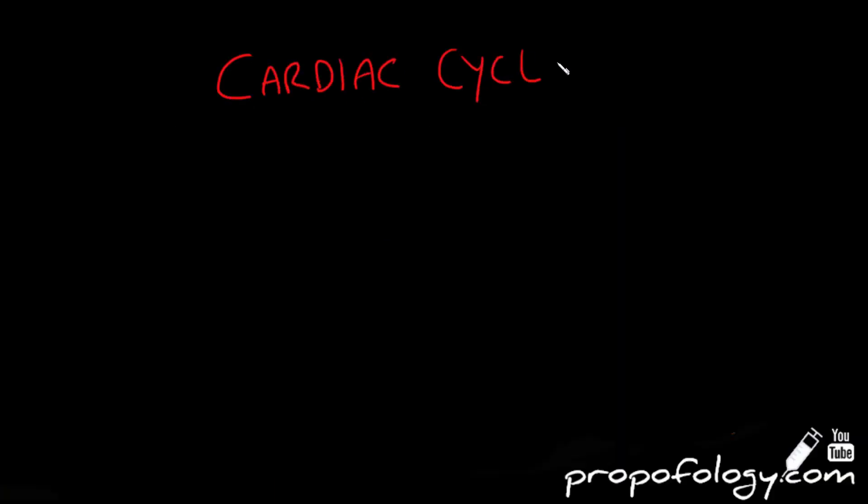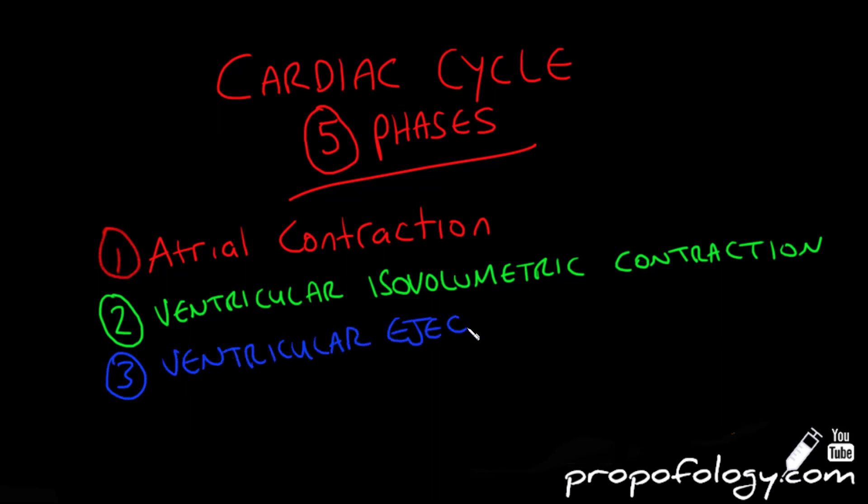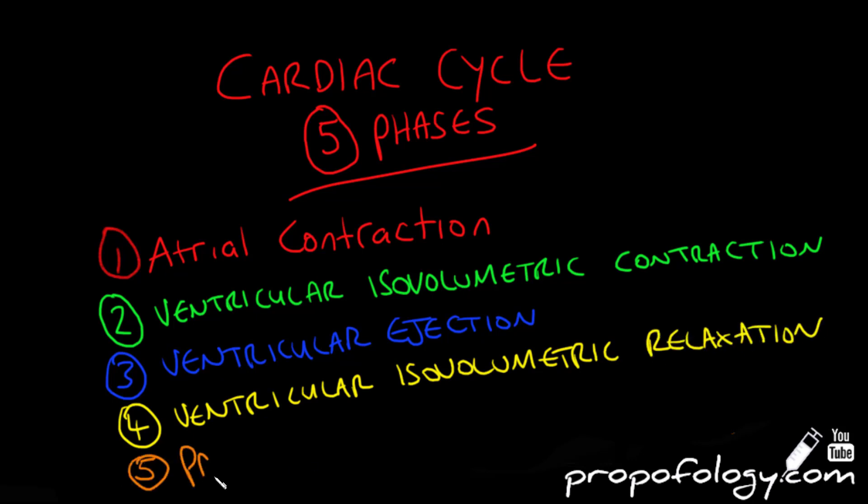There are five main phases in the cardiac cycle. Phase 1 shows atrial contraction. Phase 2 is ventricular isovolumetric or same volume contraction. Phase 3 is ventricular ejection, the systole of the ventricles. Phase 4 is ventricular isovolumetric relaxation, so the same volume while the walls of the ventricle are relaxing. And phase 5 is passive ventricular filling.